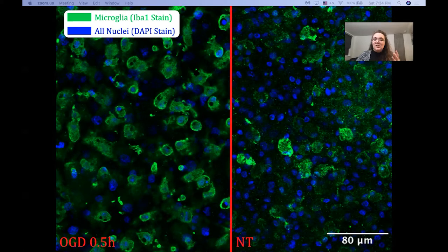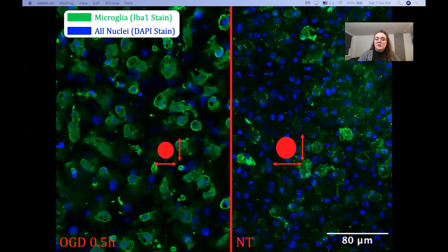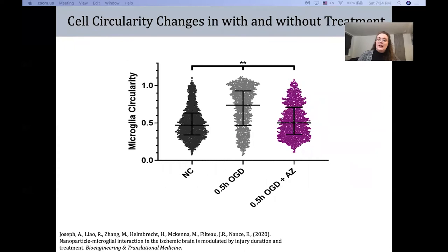We can actually quantify this with features such as perimeter, area, and major and minor axis amongst others. And when we do, for this paper, we found that in comparison to our non-treated control, our injured group actually tends towards more circular. And then when we treat it with our treatment, it goes back to a pattern that's similar to our non-treated control.